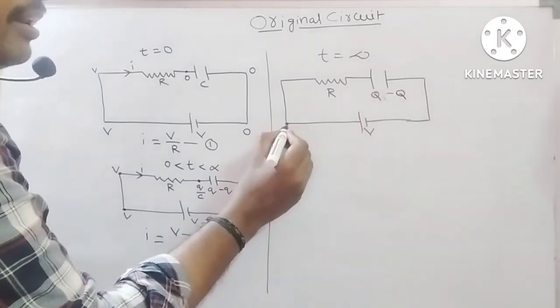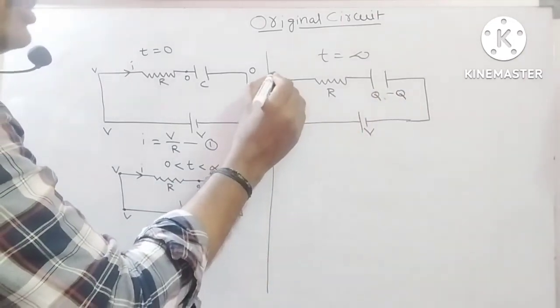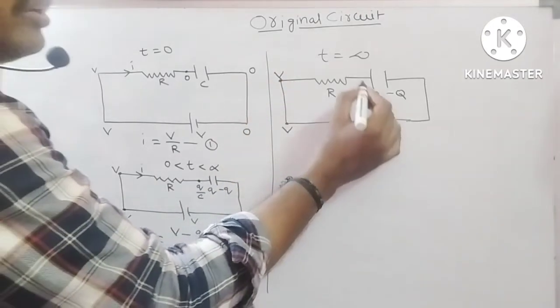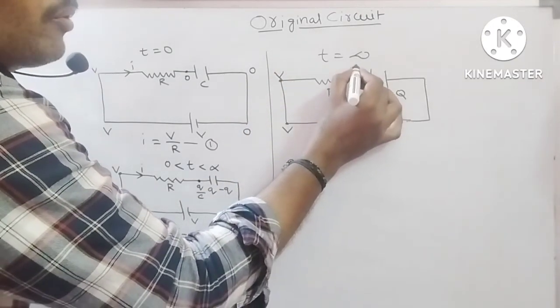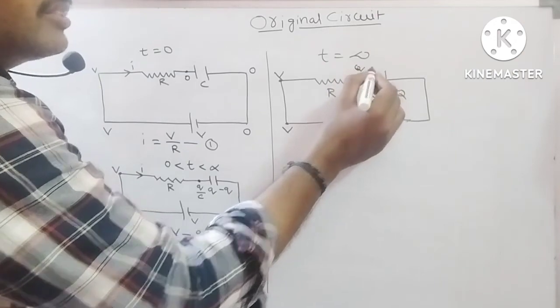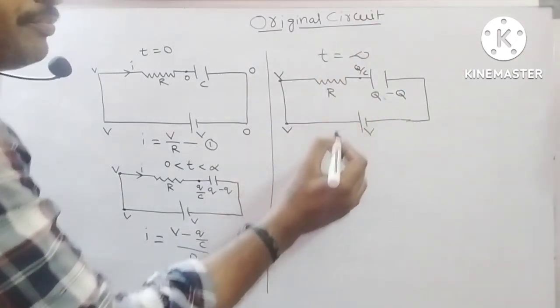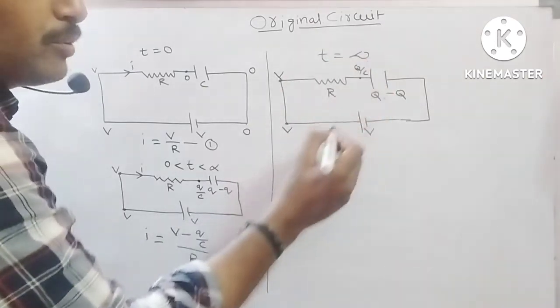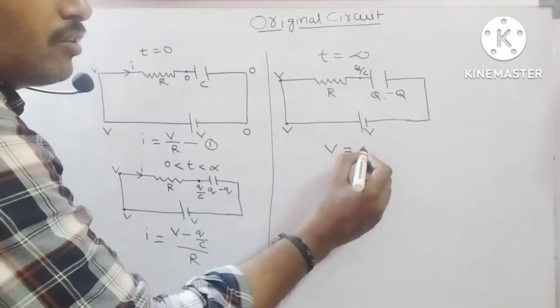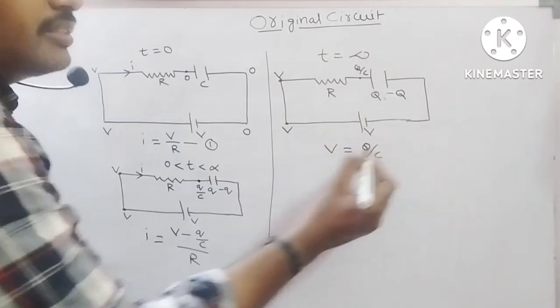Okay, here potential V, here potential V. So, here potential, simply you can write Q by C. So, at highest charge or maximum charge, V is equal to Q by C.